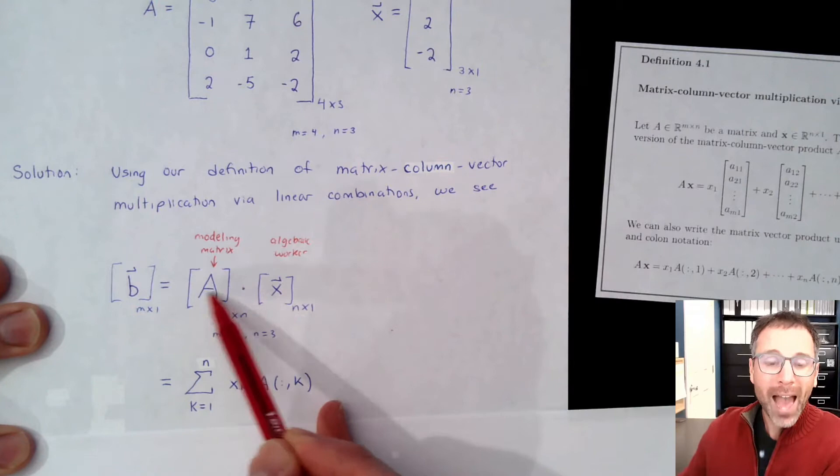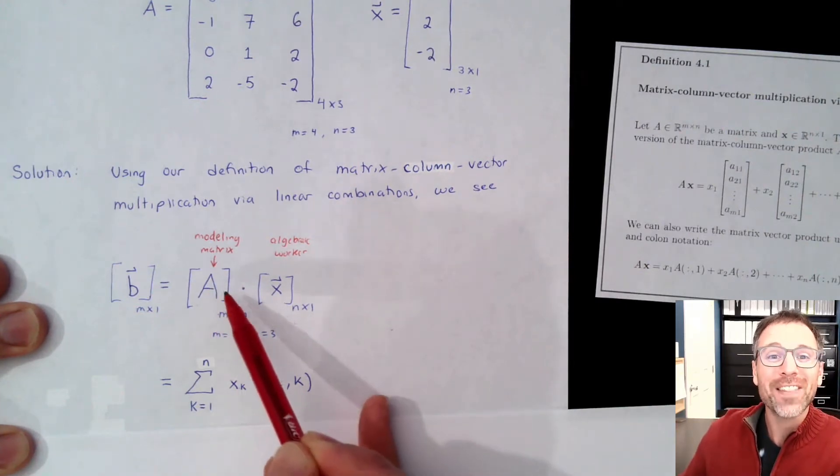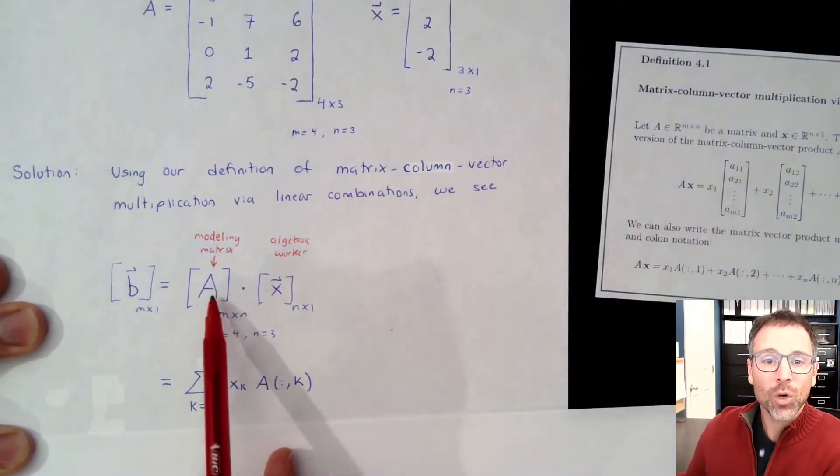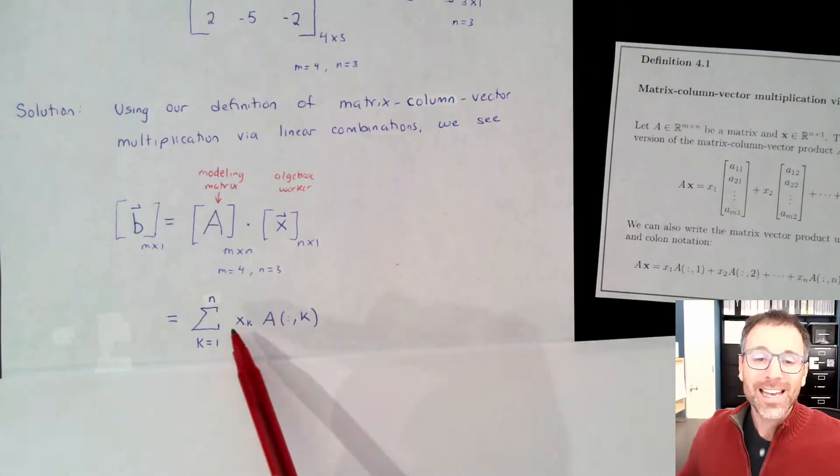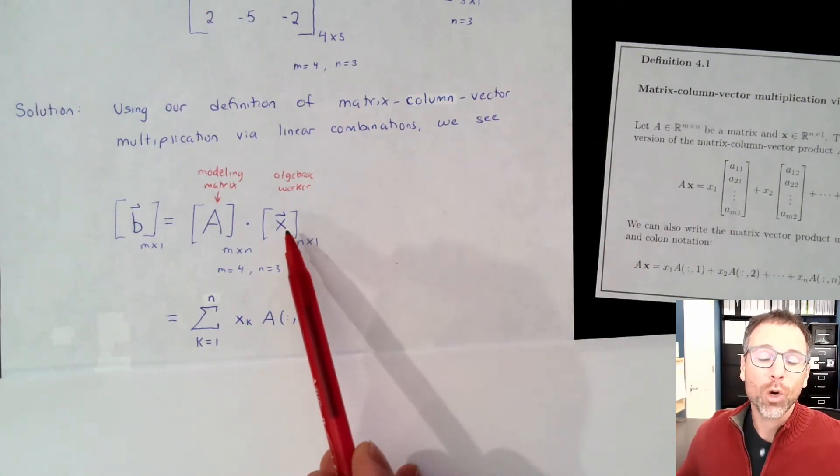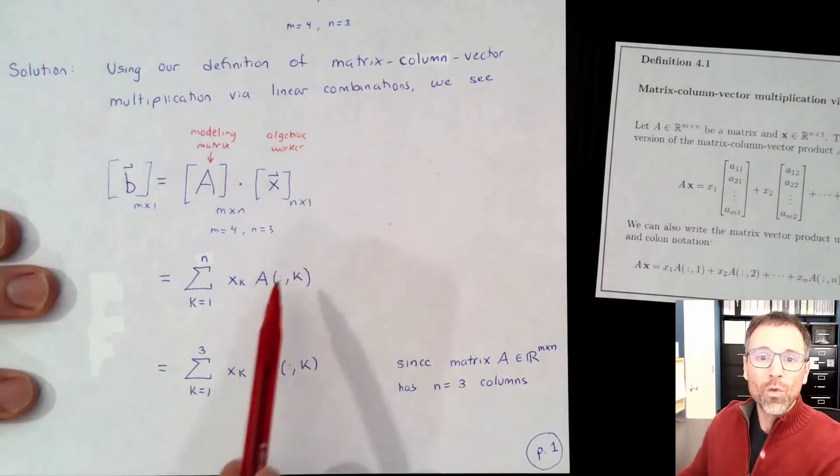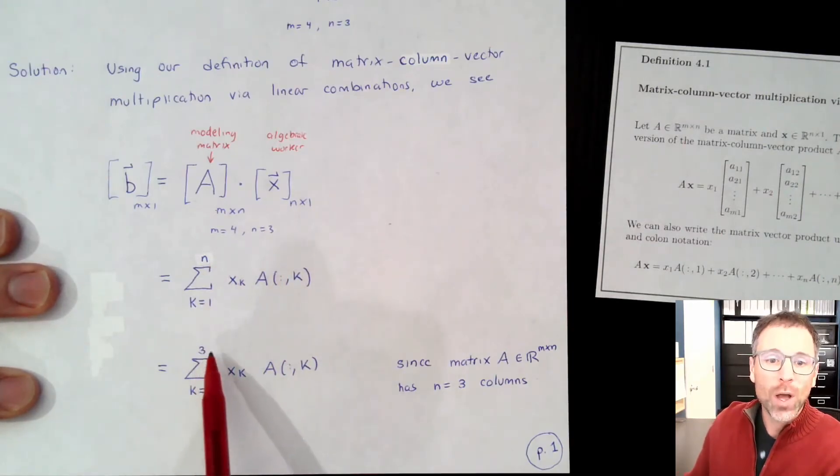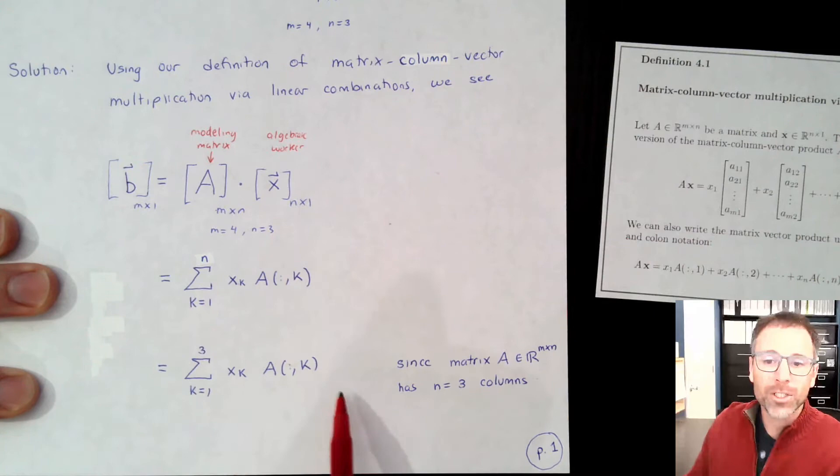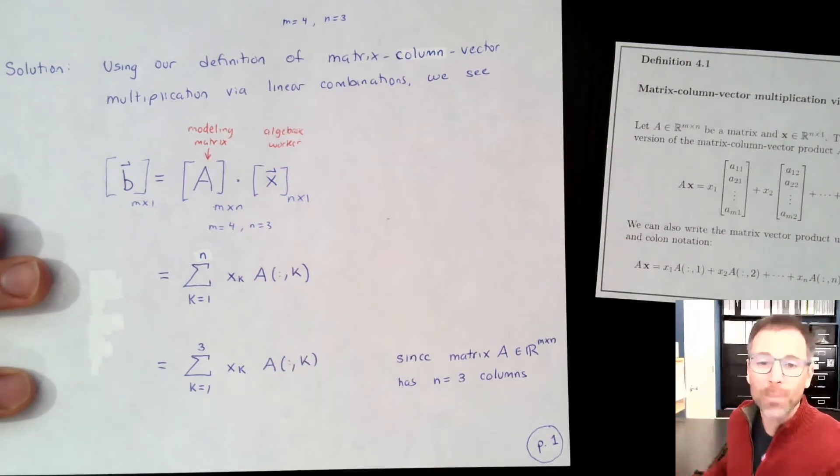In this case, when we have the modeling matrix on the left-hand side, we're going to partition that into columns. So A is now partitioned into columns. Each column gets matched with the corresponding entry of the vector x. Remember in this case, we've already said that n is equal to 3. So the top index of my sum turns to 3 since there are 3 columns in our matrix.